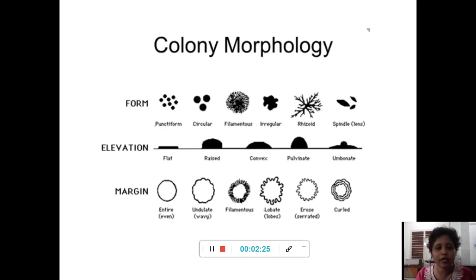Another factor that we have to consider is colony morphology. You are all familiar with the different colony morphology strategies. You can have punctiform, some would be circular, some would be filamentous, some could be irregular, some would be rhizoid and some would be spindle shape.